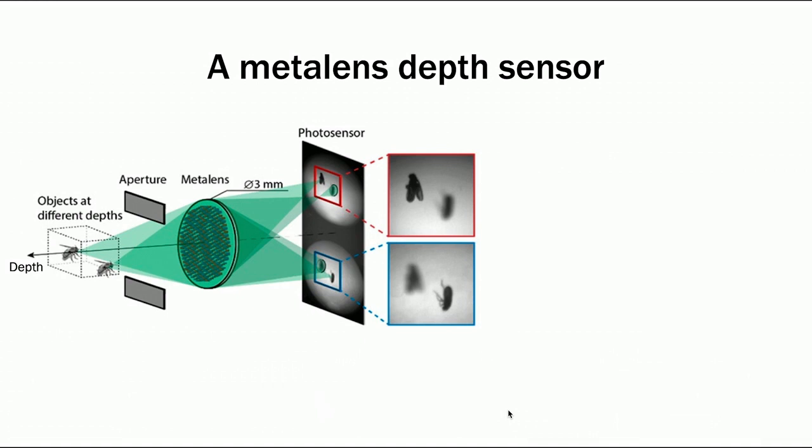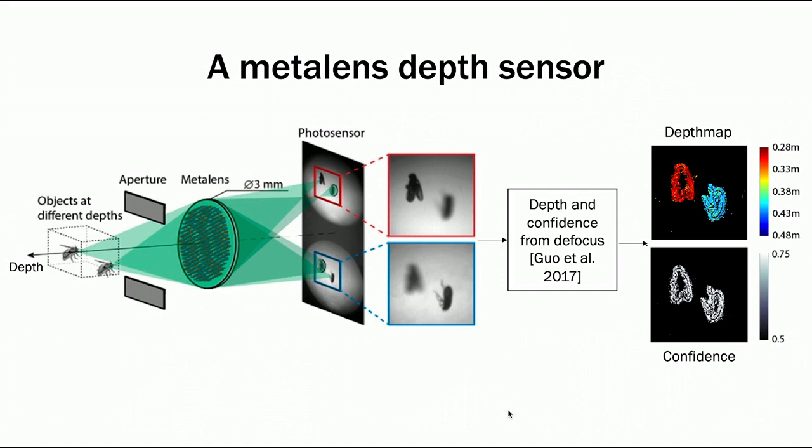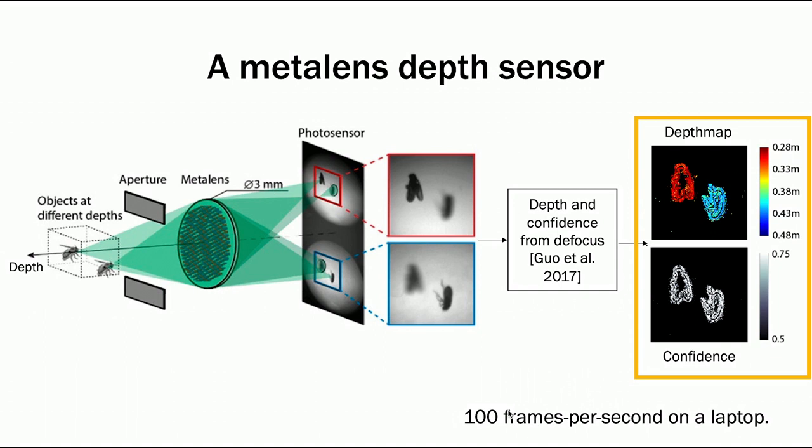By processing the defocus images with the fast depth-from-defocus algorithm we proposed in our previous paper, we build a prototype that can output depth and confidence with 100 frames per second speed using computational power of a laptop. For the depth map, we use the confidence to crop out parts that are not reliable, thus the depth map is sparse.